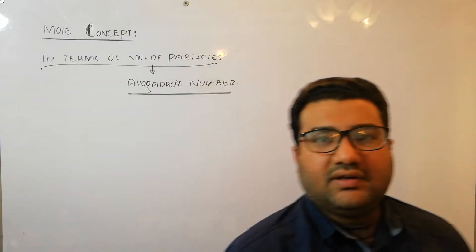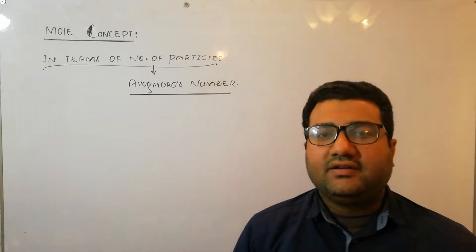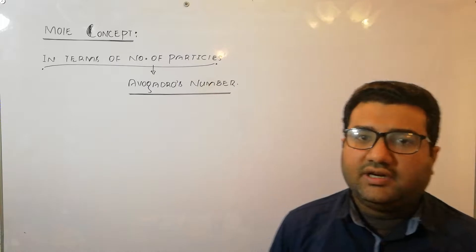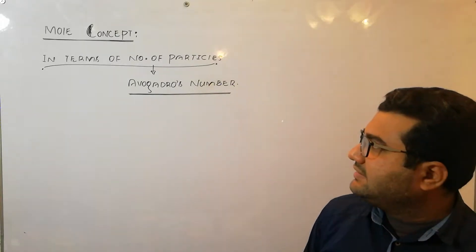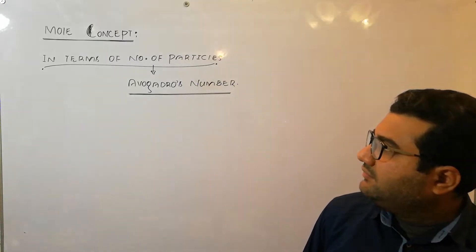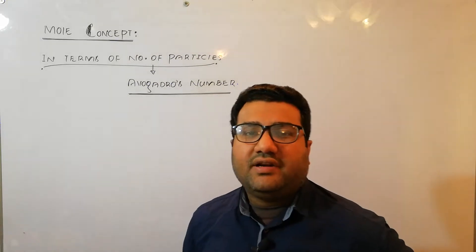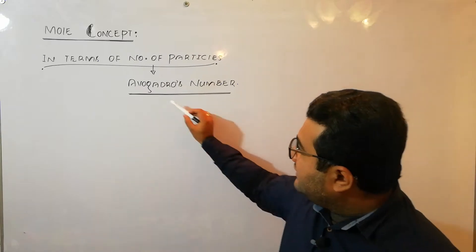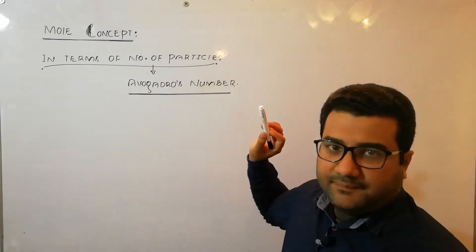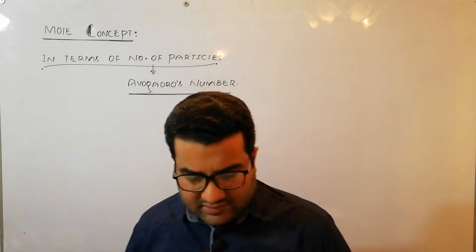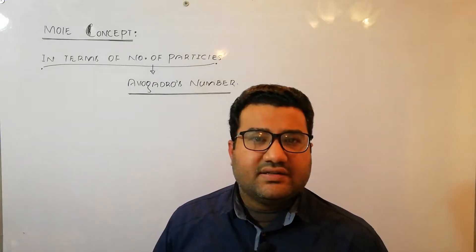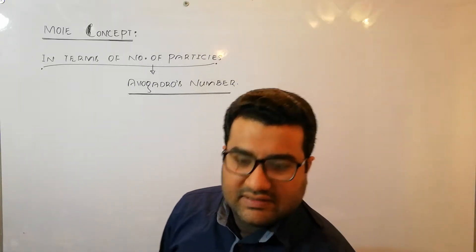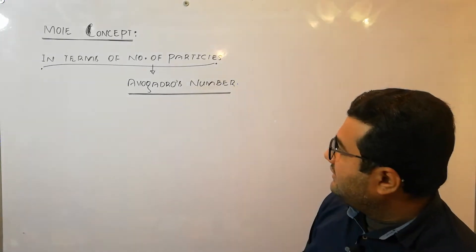Welcome everyone. Now let's start the second portion of the concept of mole — the concept of mole in terms of the number of particles. When we deal with the mole concept in terms of number of particles, we come across another term called Avogadro's number. Amidou Avogadro was a scientist who calculated the number of particles in one mole of any substance, and that's why we call it Avogadro's number.